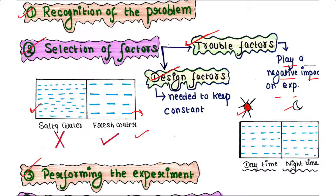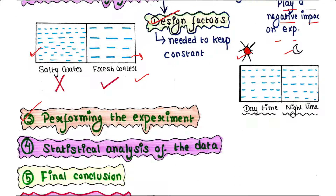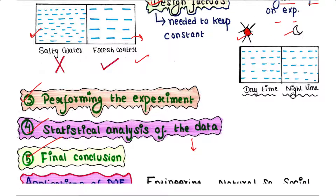The third step is performing the experiment. Once the above steps are well performed, the researcher may start the experiment. The fourth step is statistical analysis of the data — the data collected during the experiment should be analyzed statistically to come to a valid conclusion. The fifth step is the final conclusion, which should be drawn from the statistical analysis of the data.